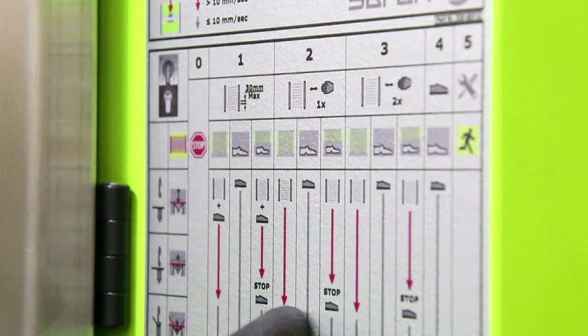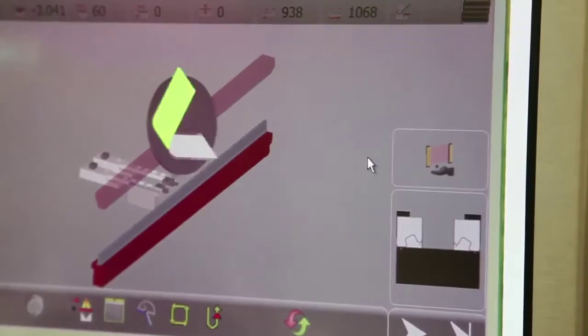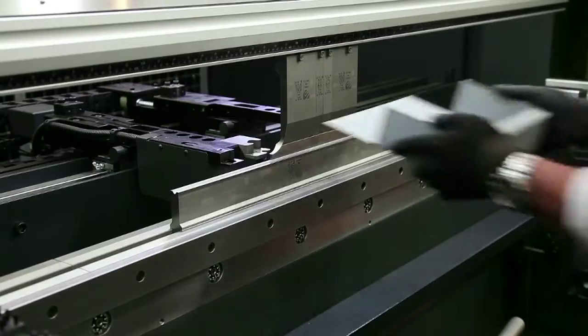Also, the integrated safety light screen is unique in its operation and offers 4 setting options, allowing any type of product to be bent quickly and safely.